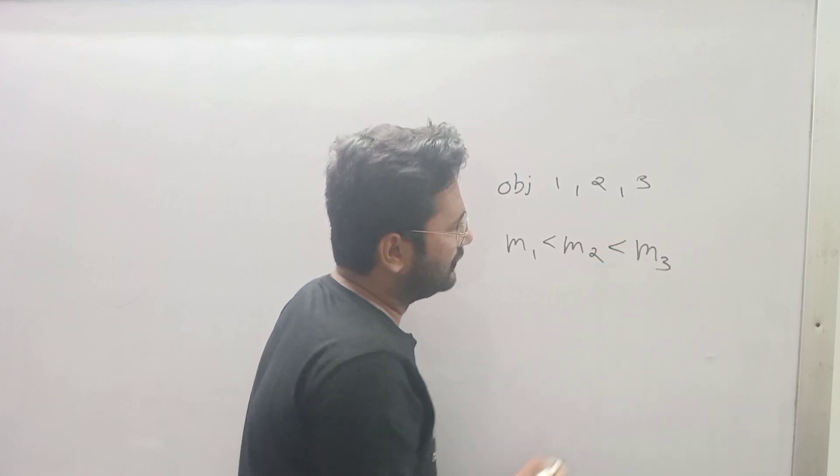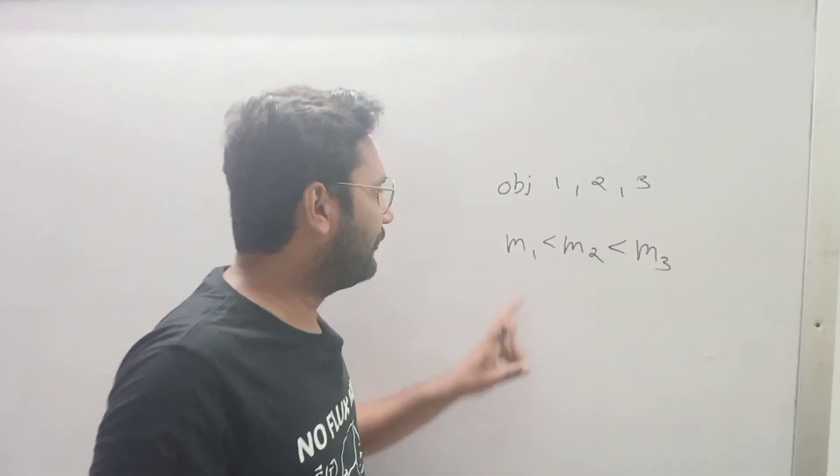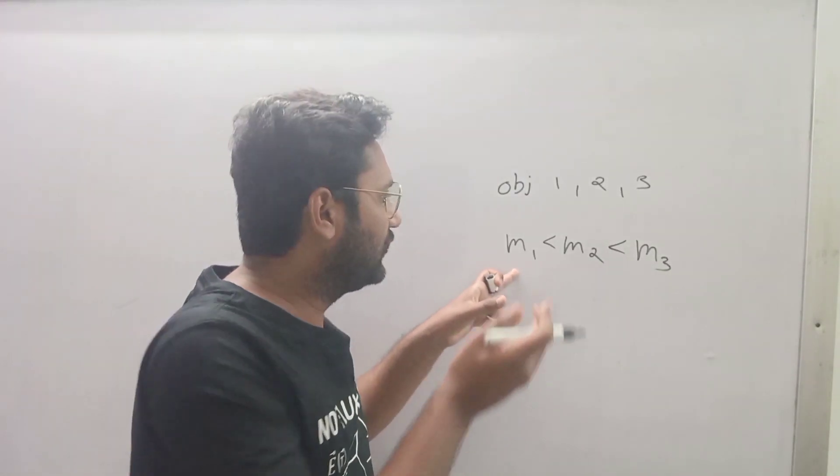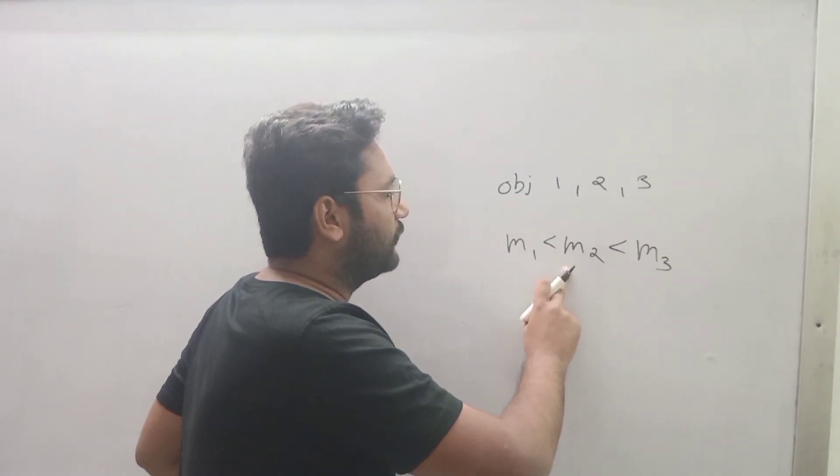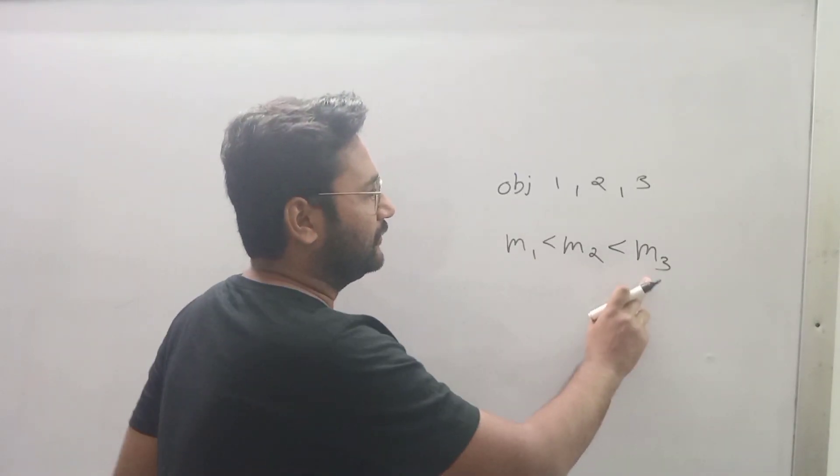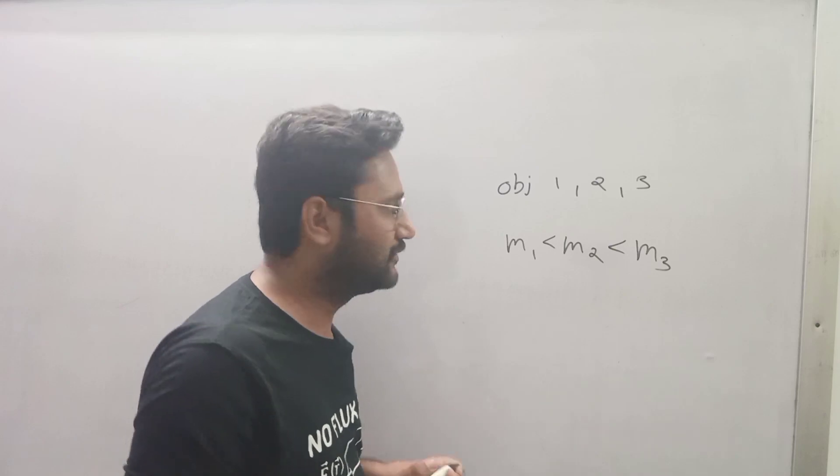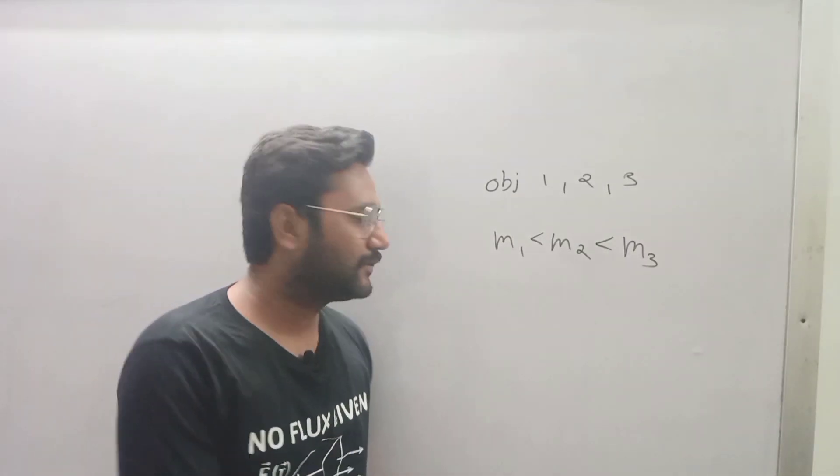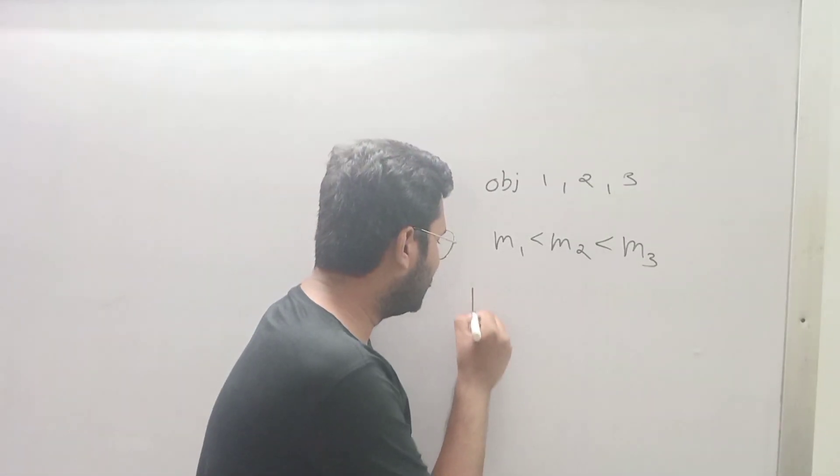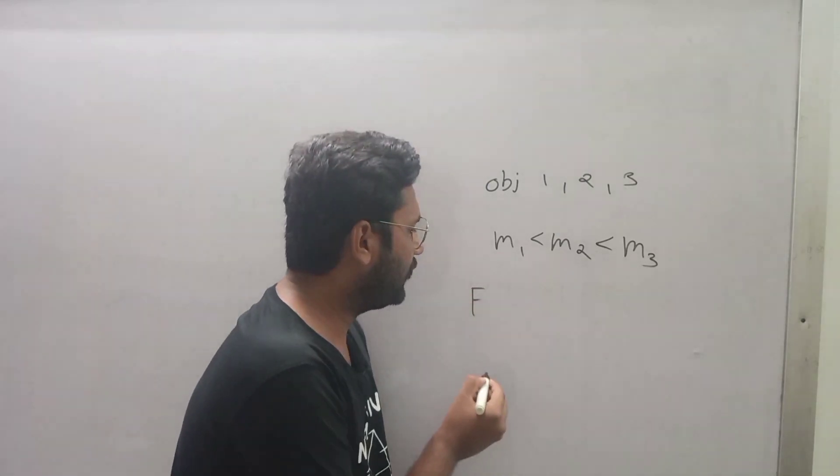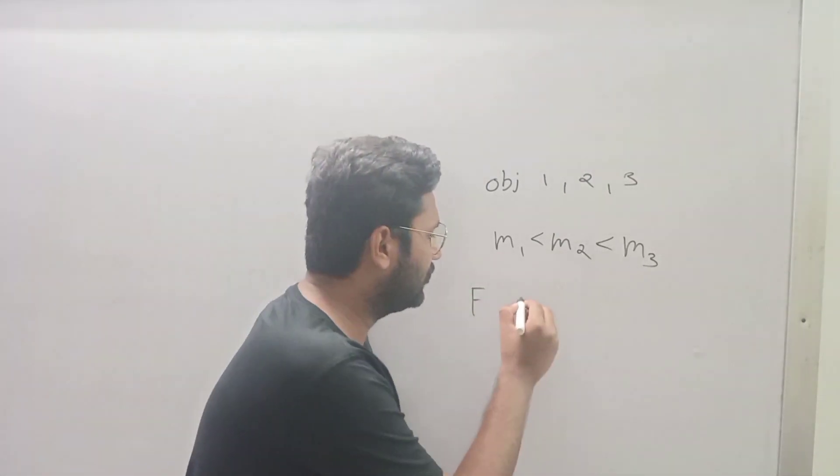Now m1 is less than m2, and m2 is less than m3. This means m1 is the smallest mass, m2 is the middle mass, and m3 is the largest mass. Here we will find the net force acting on the object and the mass of the object.